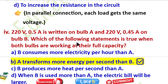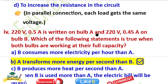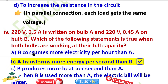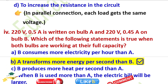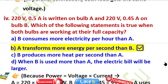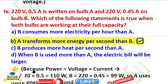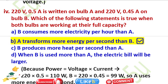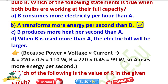Now question number 4: 200 volt 0.5 ampere is written on bulb A, and 200 volt 0.45 ampere on bulb B. Which of the following statements is true when both bulbs are working at their full capacity? The answer is: A transforms more energy per second than B. So A uses more energy per second than B.